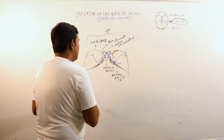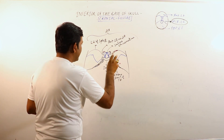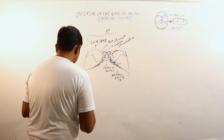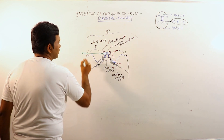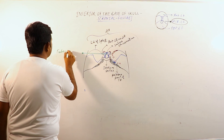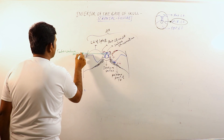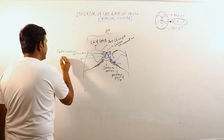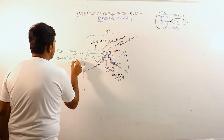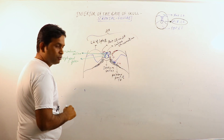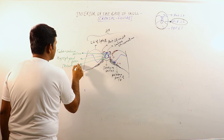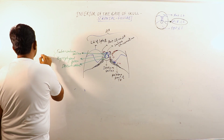We will discuss the middle cranial fossa under two headings: the median area and the lateral area. The median area includes the tuberculum sellae, the hypophysial fossa — which lodges the pituitary gland — and the dorsum sellae. These three structures are collectively known as the sella turcica.